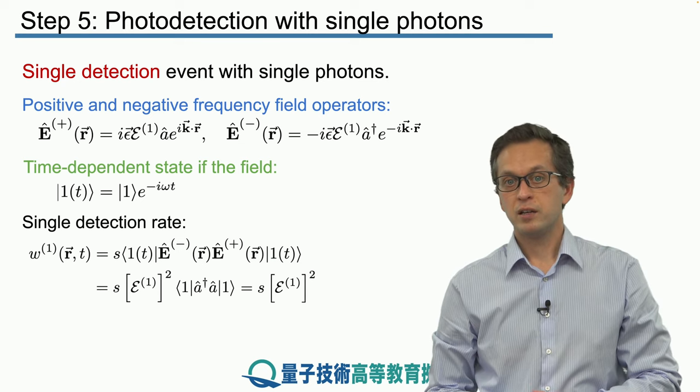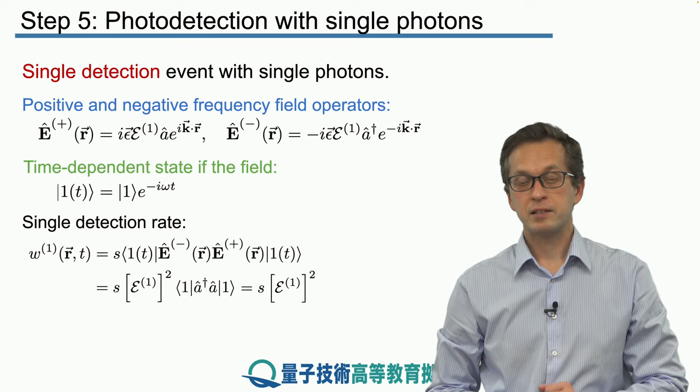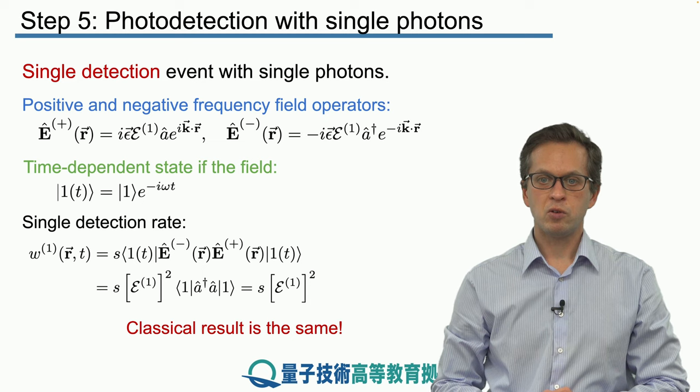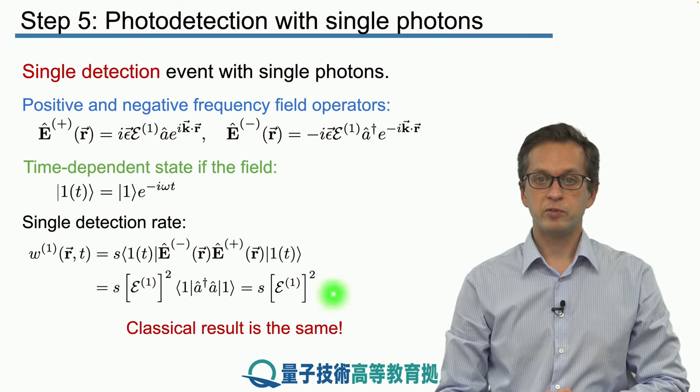And you can go back in your own time and do the same calculation for the semi-classical model of photo detection. And you will find out that you obtain the exact same expression if you set the amplitude of your classical field to be the 1 photon amplitude.